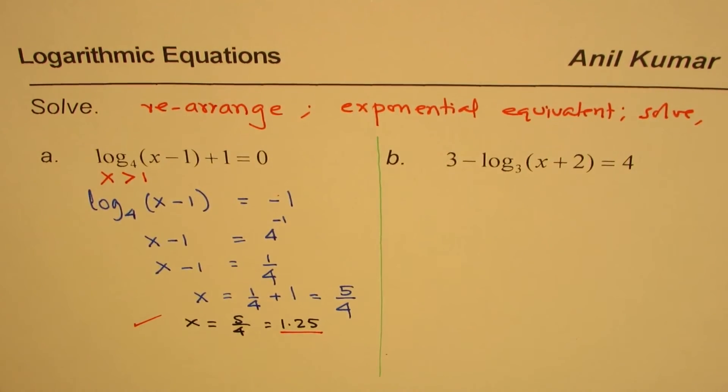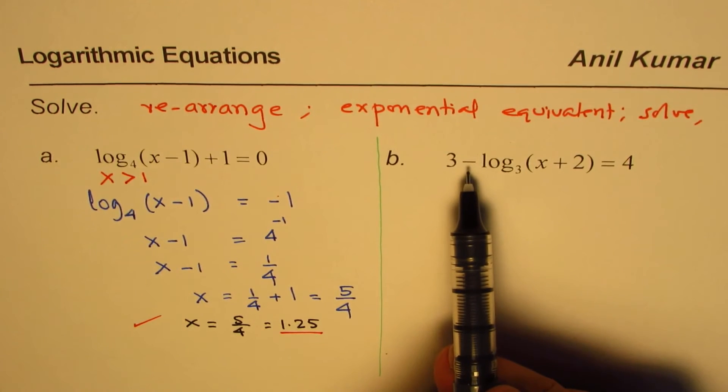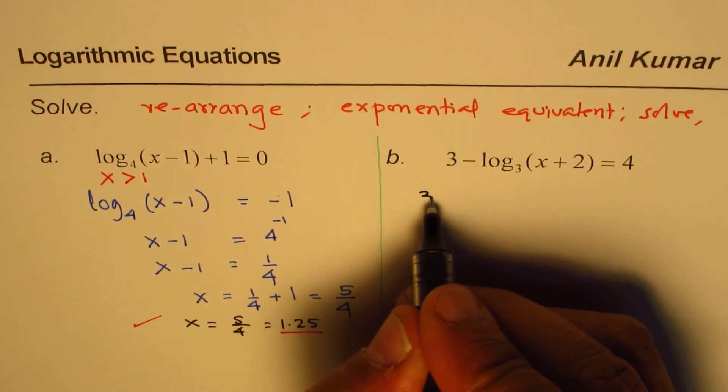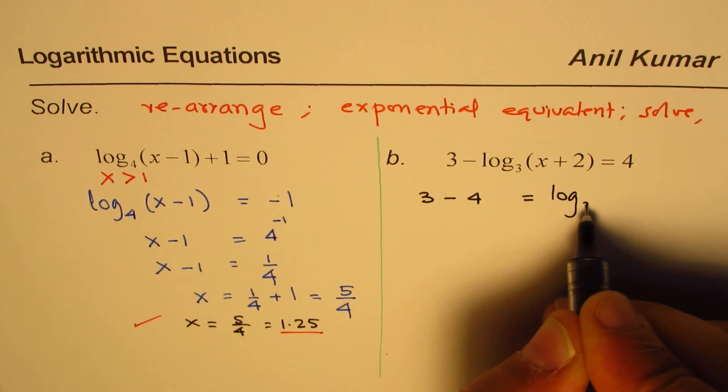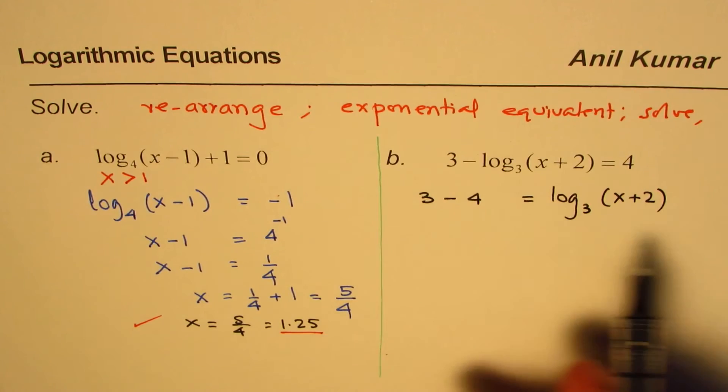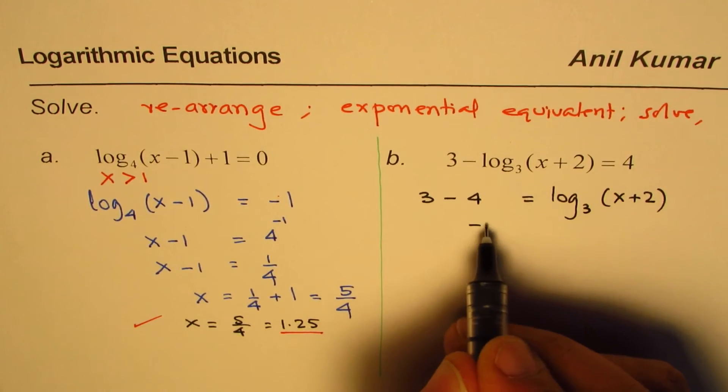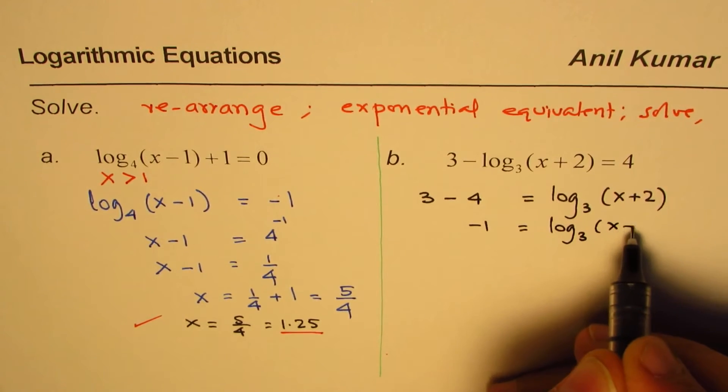Let's look into the second equation. So here we will follow the same step. Since this is negative, I prefer to take this to the right side. So we have 3 minus 4 equals to log to the base 3 of x plus 2. It does not really matter wherever you can write. So we have minus 1 equals to log 3 of x plus 2. Now it is kind of similar to what we did.